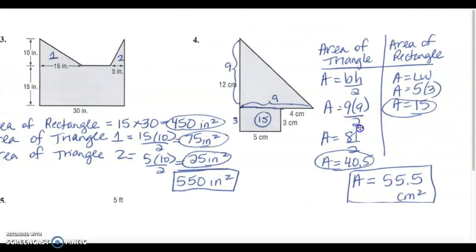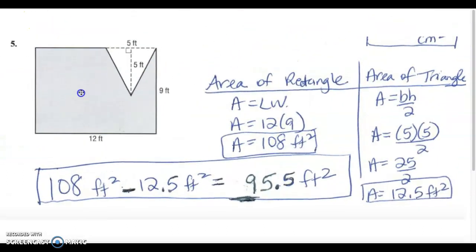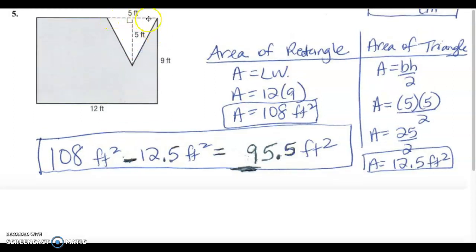Problem number five which is the last homework problem looks like this. What I did was I found the area of the entire rectangle, which was twelve times nine, 108 feet squared. And I subtracted the area of the triangle. The triangle had a base of five and a height of five. So base times height divided by two.